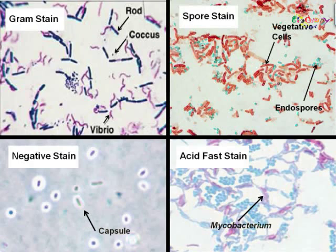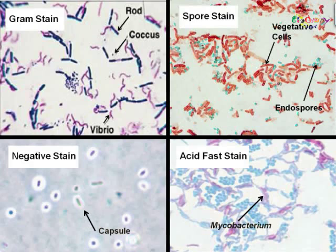This slide is a summary slide illustrating the end products of the key stains discussed. Going clockwise from the upper left, we have the gram stain, spore stain, acid-fast stain, and negative stain, where you can visualize gram-positive versus negative bacteria, endospores versus vegetative cells, mycobacterium versus other organisms, and capsulated versus non-capsulated organisms, respectively.